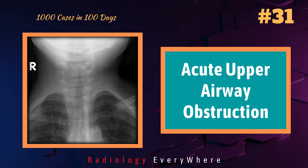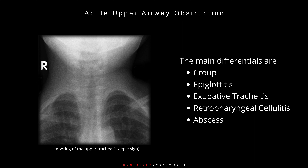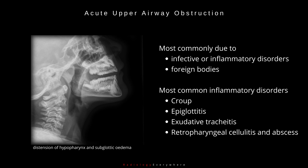In this video, we discuss the causes of acute upper airway obstruction in detail. The main differentials are croup, epiglottitis, exudative tracheitis, retropharyngeal cellulitis, and abscess. Acute upper airway obstruction is most commonly due to infective or inflammatory disorders and foreign bodies, and we cover infective causes here.